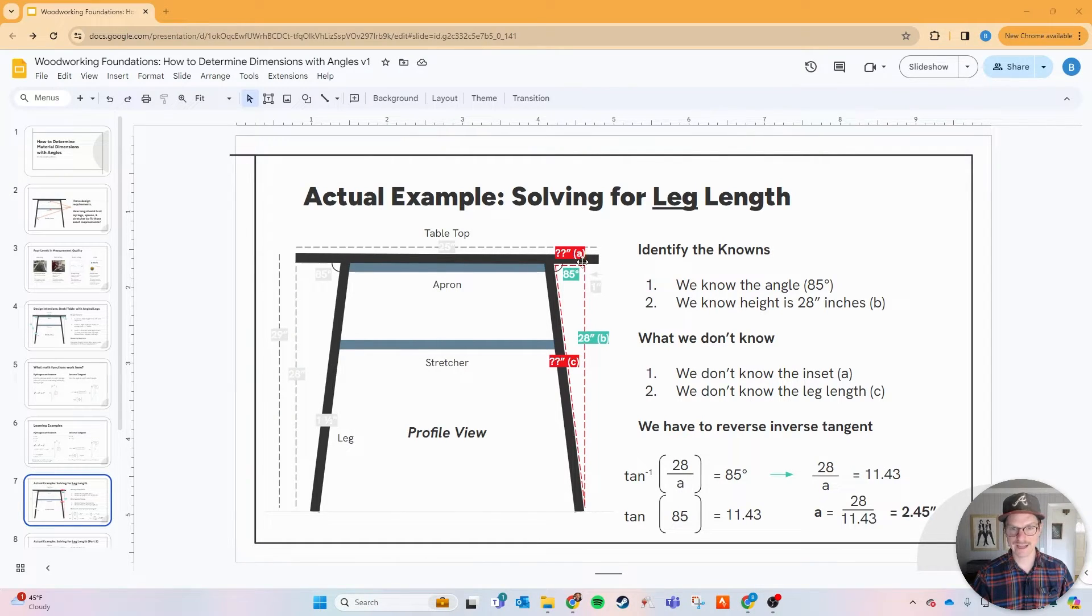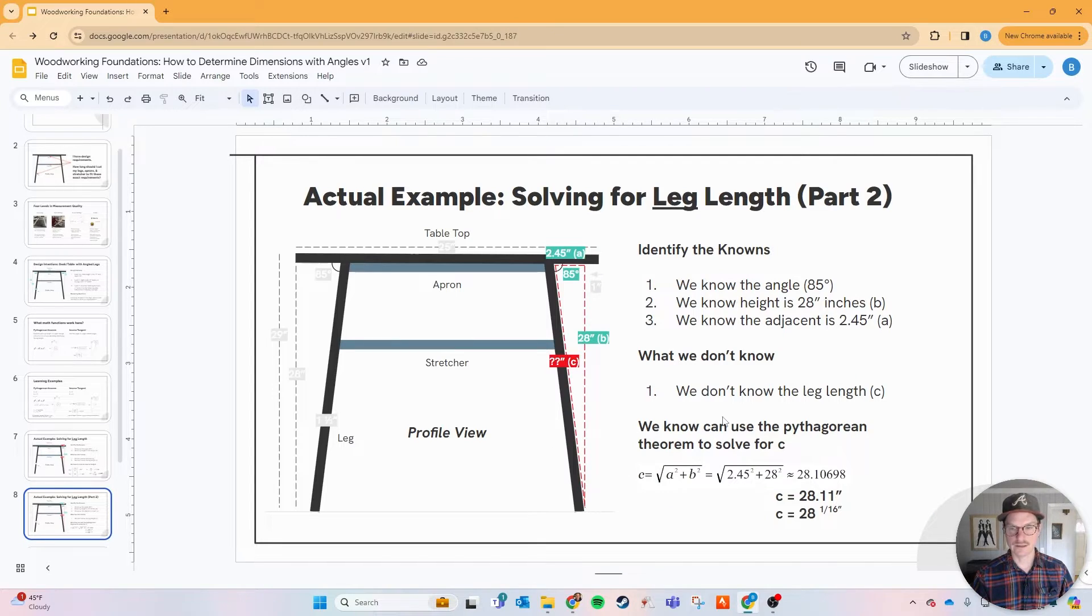Now we know a, let's take that next component and solve for c. We know the 85 degrees, we know the 28, we now know the 2.45 inches on the inset. What is the length of the leg? This is where we use Pythagorean theorem to solve for c. That's where we do the square root of 2.45 squared, that's right here, and then the square root of 28 squared of the depth or the tabletop to the bottom, and we do the square root of that. That's 28.11 or 28 and 1/16th.